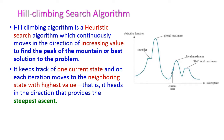The hill climbing algorithm is a heuristic search algorithm which continuously moves in the direction of increasing value to find the peak of the mountain or best solution to the problem. In the hill climbing algorithm, it will keep on moving towards the peak of the mountain. The searching will continue until it reaches the best solution or peak of the mountain.